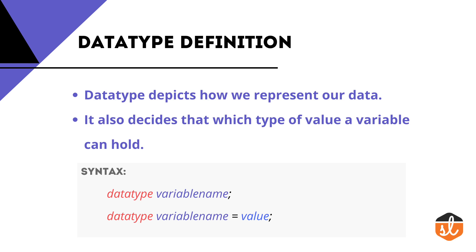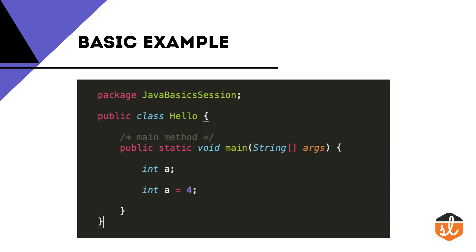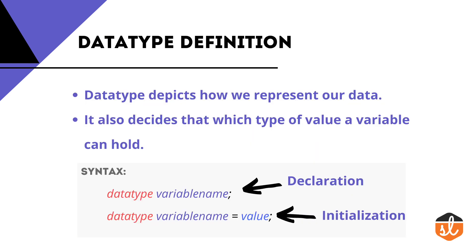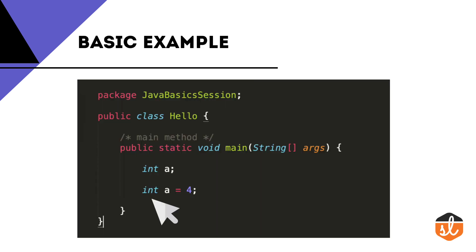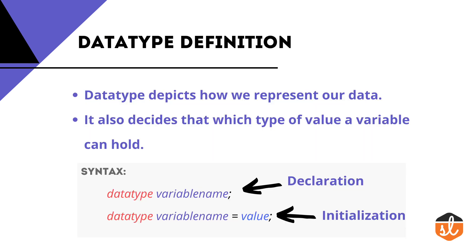If you talk about the syntax, there are two ways to specify a data type. For the declaration part, follow the syntax: data type then variable name. For example, 'int a' means variable 'a' only contains integer values. If you want to initialize a value, use: int a = 4, where int is the data type, a is the variable name, and 4 is the value.